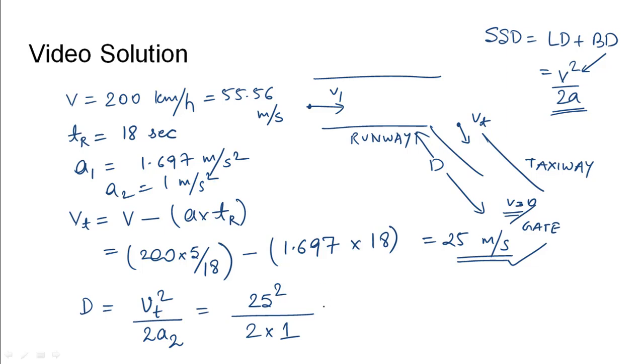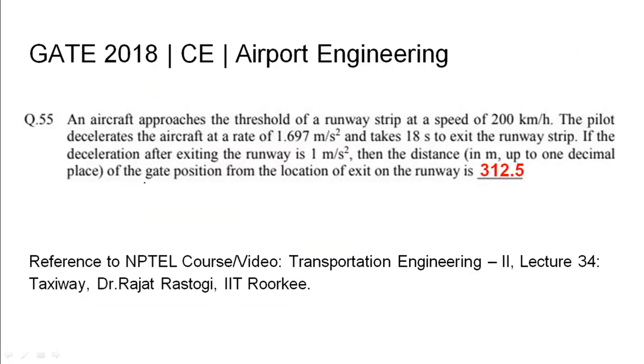Using this, the value is obtained as 625/2, which equals 312.5 meters. Therefore, the distance of the gate position from the location of exit on the runway is 312.5 meters. The relevant NPTEL reference has been cited.